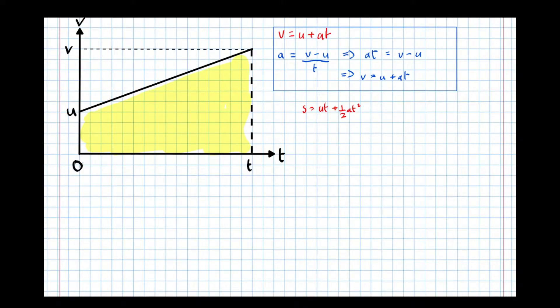If we split this up into two separate shapes, with a rectangle at the bottom and a triangle at the top, split up using that dotted line there, we've got the area of the rectangle at the bottom is U times T. Now looking at the triangle, the height is V minus U, and the base has length T. So a half base times height gives the area of the triangle and the displacement.